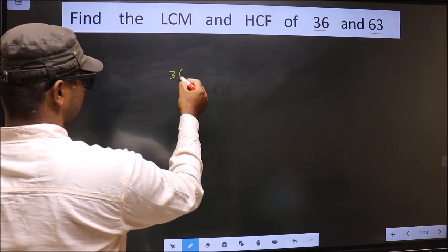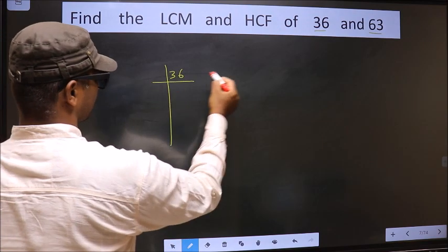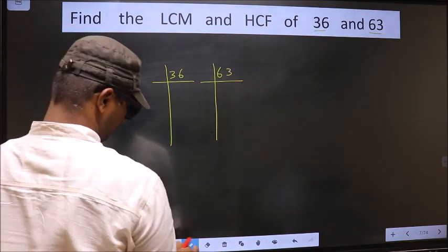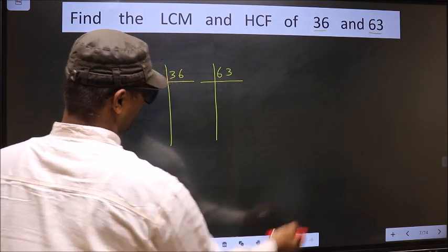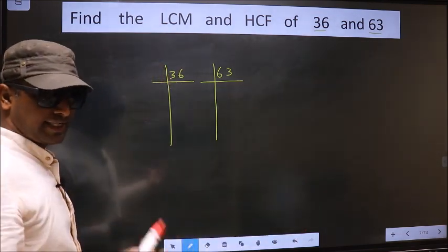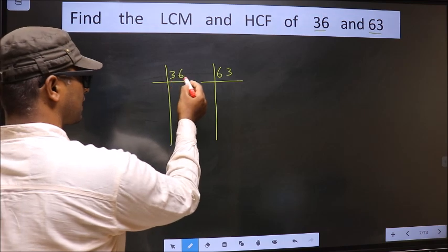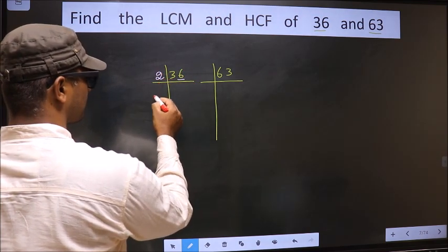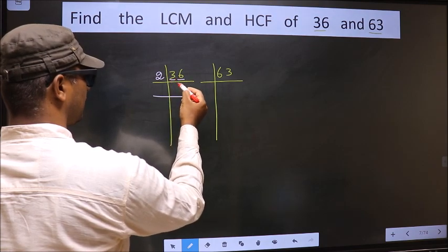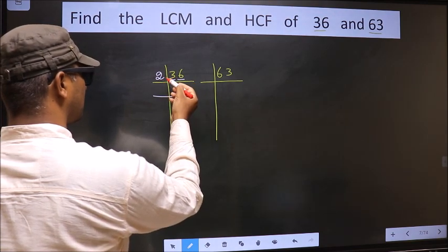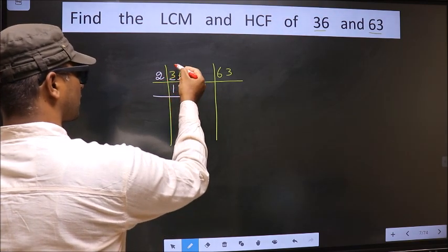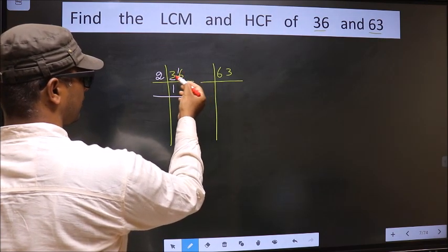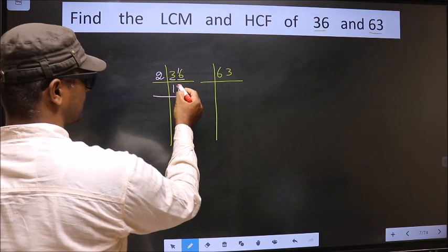We take 36 and 63. For 36, the last digit is 6, so we take 2 here. The first number is 3; a number close to 3 in the 2 table is 2. 3 minus 2 is 1, carried forward making it 16. When do we get 16 in the 2 table? 2 eights are 16. So now we have 18.